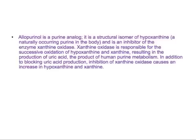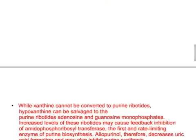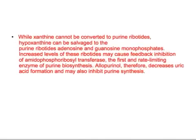Xanthine oxidase is responsible for the successive oxidation of hypoxanthine and xanthine, resulting in the production of uric acid — the product of human purine metabolism. Inhibition of xanthine oxidase causes an increase in hypoxanthine and xanthine. While xanthine cannot be converted to purine ribotides, hypoxanthine can be salvaged to purine ribotides — adenosine and guanosine monophosphates. Increased levels of these ribotides may cause feedback inhibition of amidophosphoribosyl transferase, the first and rate-limiting enzyme of purine biosynthesis. Allopurinol therefore decreases uric acid formation and may also inhibit purine synthesis.